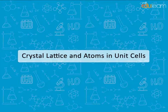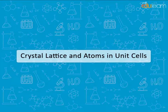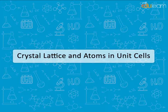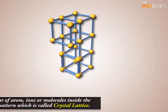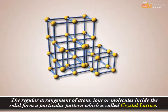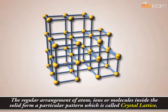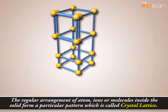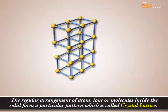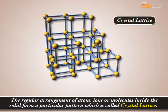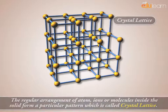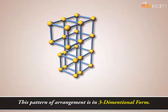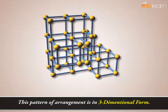Crystal lattice and atoms in unit cells. The regular arrangement of atoms, ions, or molecules inside the solid forms a particular pattern which is called crystal lattice. This pattern of arrangement is in three-dimensional form.